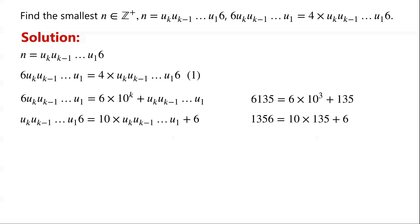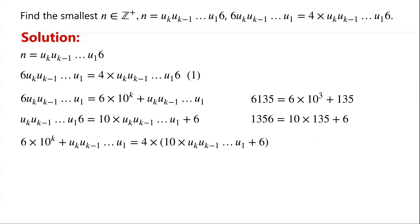Substituting the resulting number and the original number into equation 1, we have: 6 × 10^k + (u_k, u_{k-1}, ..., u_1) = 4 × (10 × (u_k, u_{k-1}, ..., u_1) + 6). Collecting like terms and simplifying the equation, we have: 6 × 10^k = 39 × (u_k, u_{k-1}, ..., u_1) + 24.